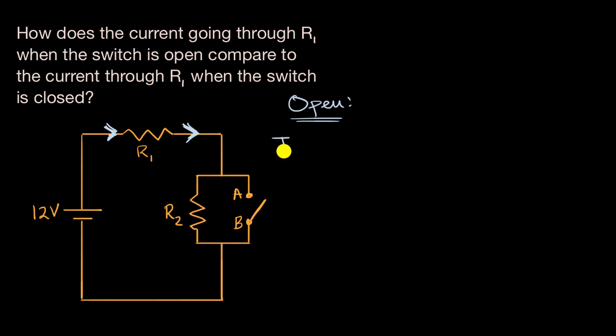So our current, when our switch is open, is going to be equal to the voltage across the resistors, and that's going to be our 12 volts, divided by the equivalent resistance of these resistors. When the switch is open, essentially we just have R1 and R2 in series.